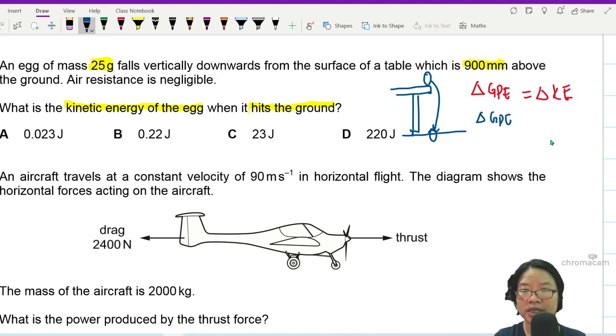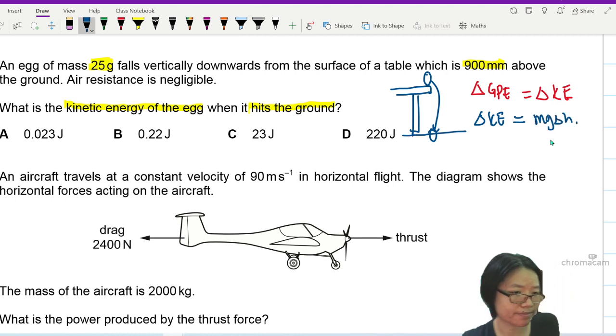So change in GPE now will be half MV square. Wait, wait, wait. Probably one KE, sorry. Change in GPE is change in KE. So change in KE will now be equal to Mg change in height.